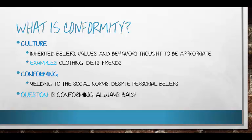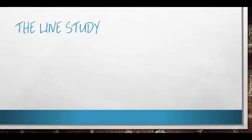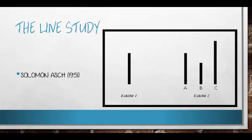Let's look at conformity through one of the more famous studies done on it — Solomon Asch's 1951 experiment. Six to ten students would come into a room, sit in a row, and look at a picture with a line on the left and three lines on the right. The experimenter would ask which of those lines matches the one on the left: A, B, or C? The answer is A — it's as easy as it looks. But that's not the real experiment.